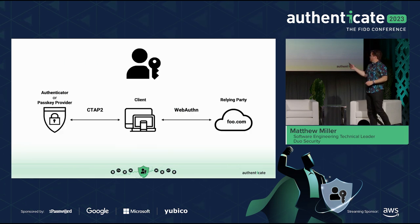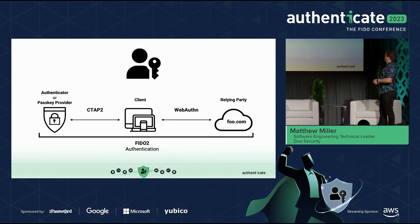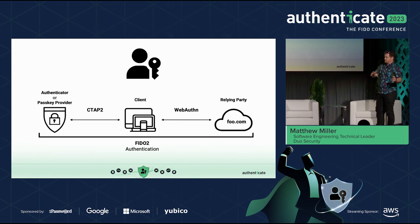There are aspects of CTAP2 and WebAuthn that allow for hybrid registration. Hybrid registration — to clear up another term — is the QR code you scan with your phone to register something or to sign in on a desktop using a credential available on your phone. FIDO2 is comprised of CTAP2 and WebAuthn — that's the relationship between all of these.